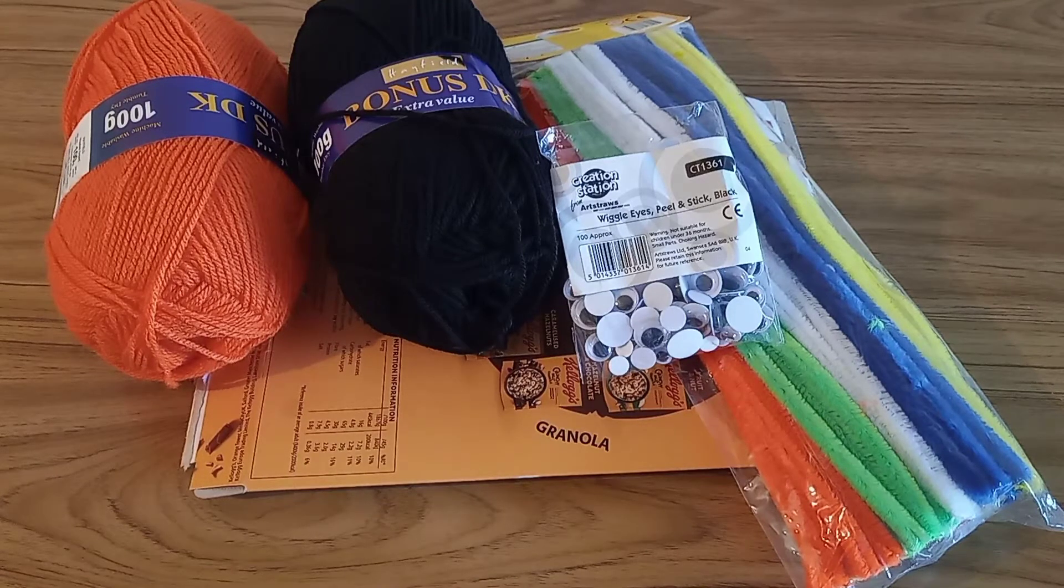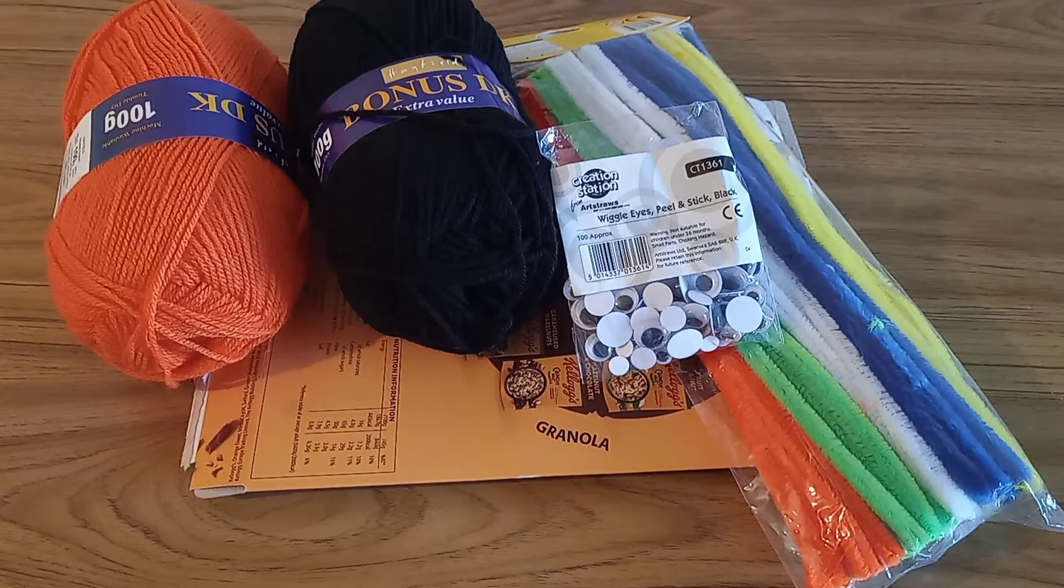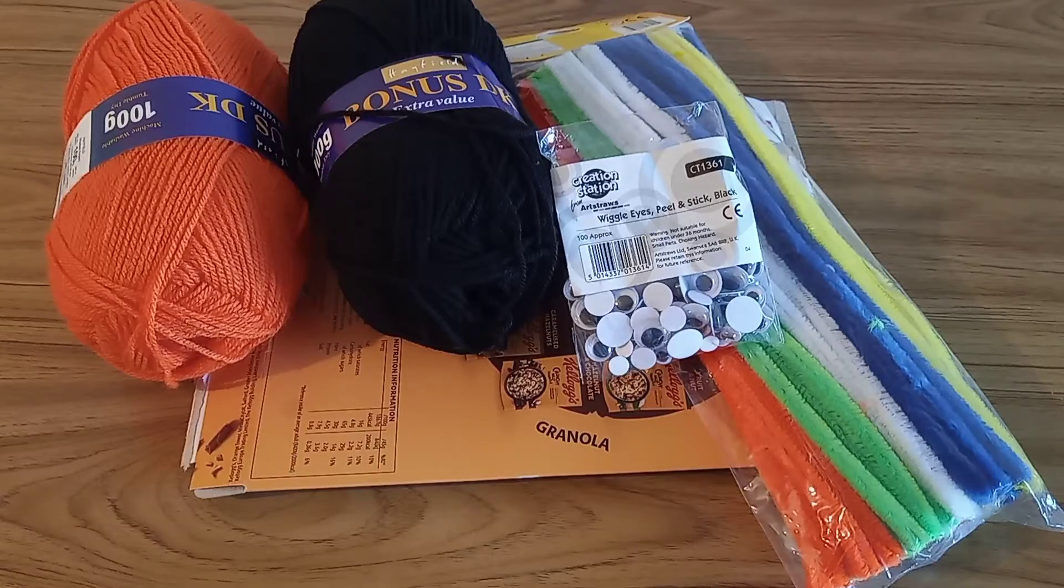To make these you're going to need wool in the color of either orange for pumpkins or black for spiders, and obviously you can do other colors if you want, some cardboard like a cereal box, some googly eyes, preferably the ones that have a sticky backing on them, and then some pipe cleaners.